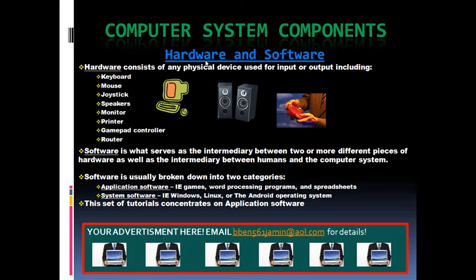Software is the intermediary between either two pieces of hardware or between hardware and a human being. For example, TCP/IP protocols serve as the conduit between two routers' communications, enabling your computer to communicate with the server which stores this video at YouTube. The operating system you are using serves as the intermediary between the vast processing power of your CPU and yourself. Without it, you would have to know machine code to be able to use your computer, which is a very complicated language of zeros and ones. Software is generally thought of as being either application software or system software.